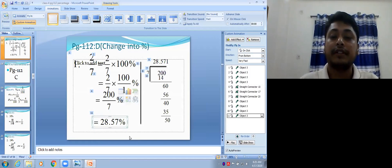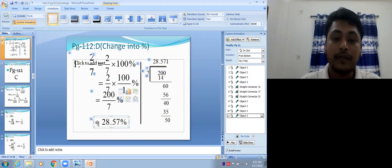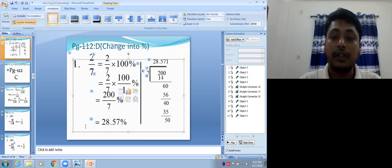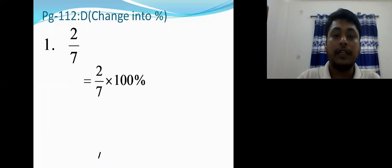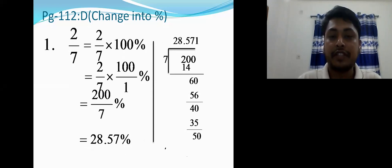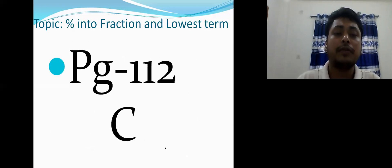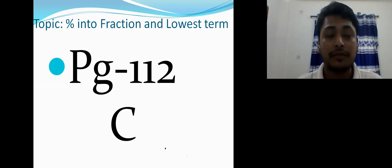I hope you understood. The answer is 28.57 percent. The same way, you can do all maths in section D. Now we are moving to section C — percentage into fraction in lowest term.